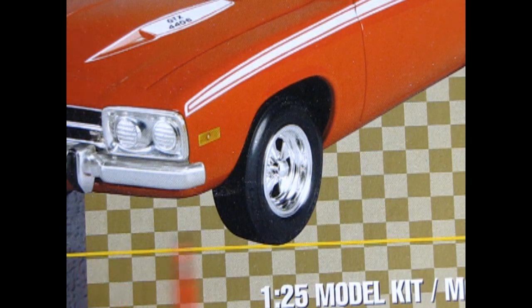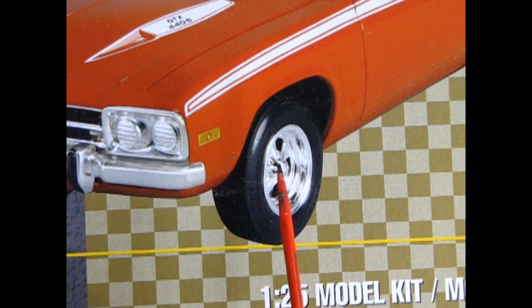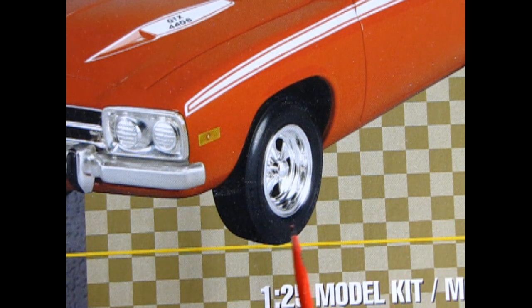One thing to note is on the box art the model builder has installed these Kregermag wheels on the car which look really nice, however the Kregers are not included in this kit. Instead you get rally wheels and flat style 1980s centerline racing wheels.